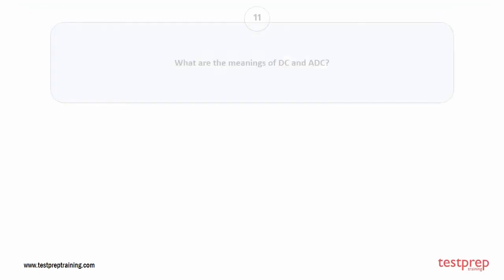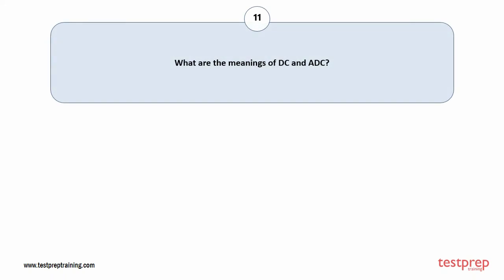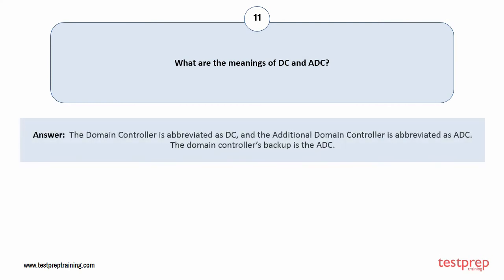Question number 11: What are the meanings of DC and ADC? The domain controller is abbreviated as DC, and the additional domain controller is abbreviated as ADC. The domain controller's backup is the ADC.